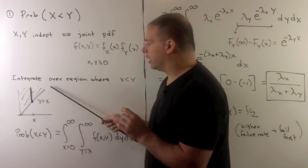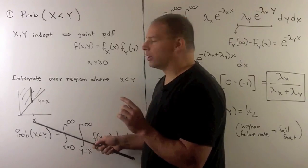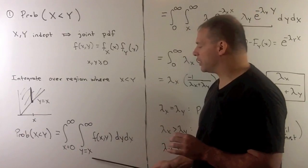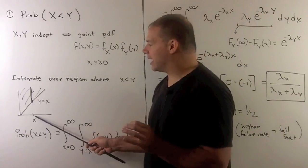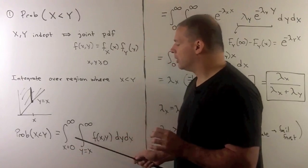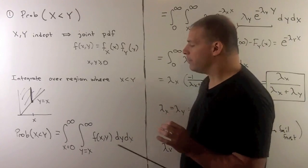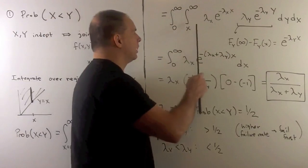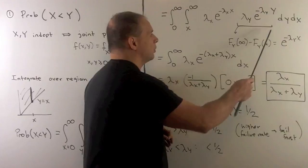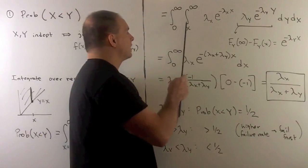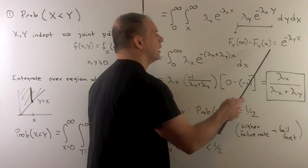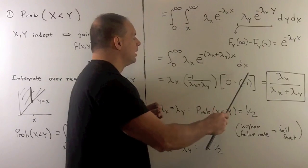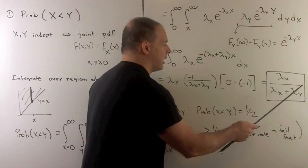We find the limits for the double integral. Fixing x, the inside integral is in y: y ranges from y equals x to y equals infinity. For the outside limits, projecting down to the x-axis, x goes from 0 to infinity. Substituting everything in gives the double integral. Evaluating the inside integral, the x-dependent term factors out, and we integrate the exponential in y from x to infinity, giving e to the minus lambda y times x. Multiplying and adding exponents yields a single-variable integral, which evaluates to lambda x over lambda x plus lambda y — that's our answer.